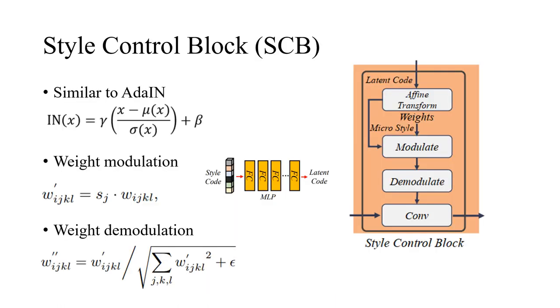We leverage the merit of style GAN2 to construct SCB. SCB consists of a convolution layer and two operations: modulation and demodulation, to its weights. Following style GAN, we get latent code from style code and get style from latent code. In the weight modulation, we multiply the style by the weight of the convolution layer to inject style into the activation. In the weight demodulation, we shrink the weight to keep the statistics of activation unchanged.